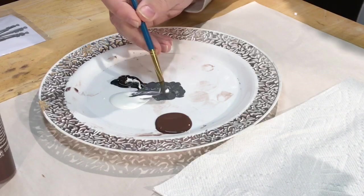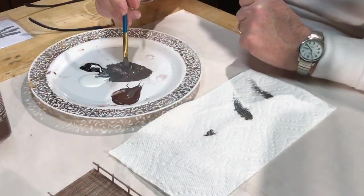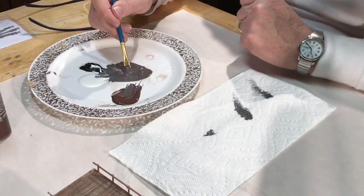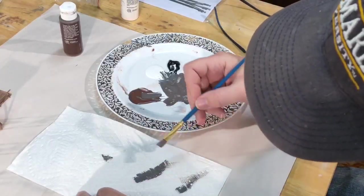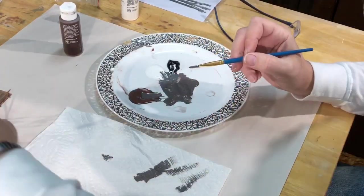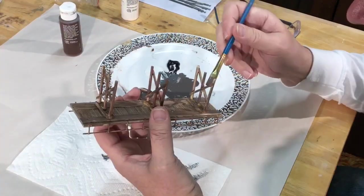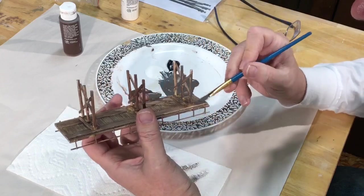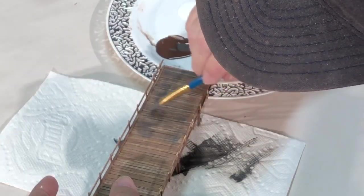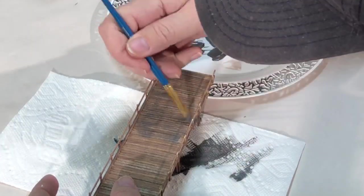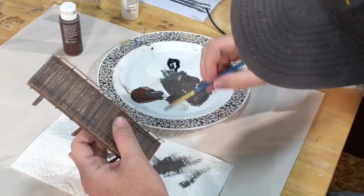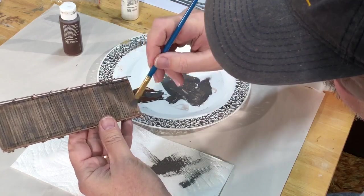So I mixed some black and white together to make gray and then added some brown to that, kind of a grayish brown paint, and then I dry brushed the entire bridge once again. Well I like this color a lot better.